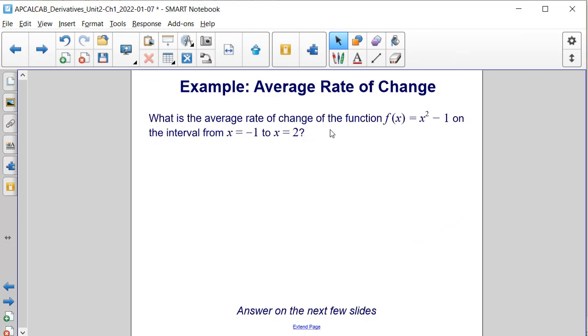What is the average rate of change of the function f of x is equal to x squared minus 1 on the interval from x equals negative 1 to x equals positive 2? Let's figure that out.